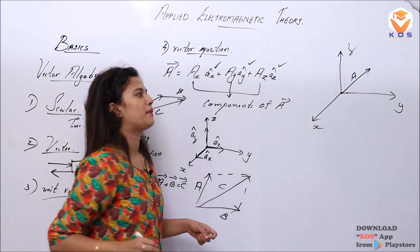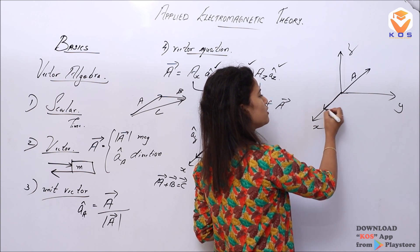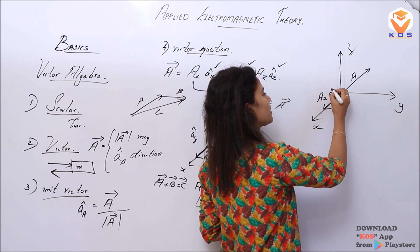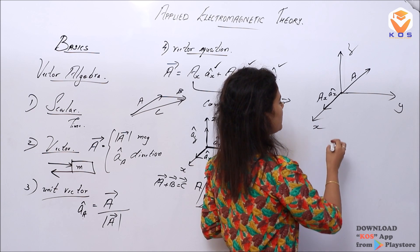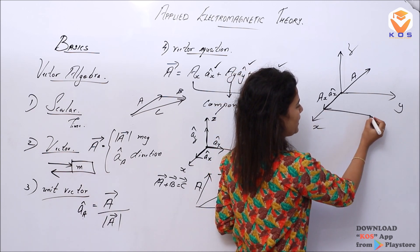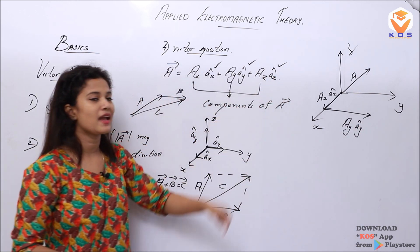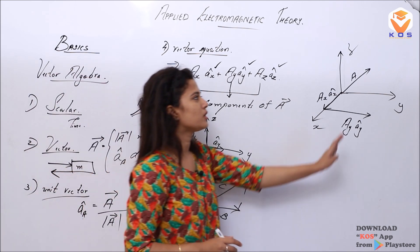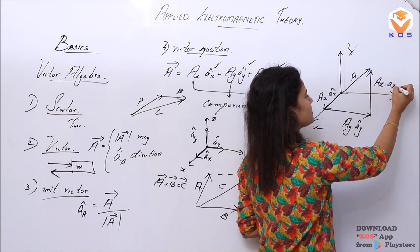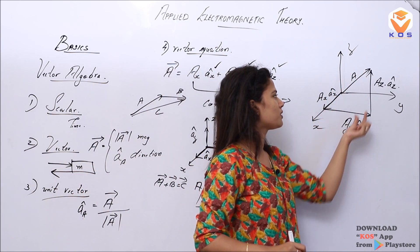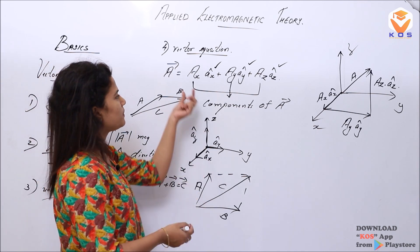We have AX·AX̂ directed along the X direction, then AY·AŶ directed along the Y direction, and AZ·AẐ directed along the Z direction. This is my AX component, AY component, and AZ component — this is how we resolve the vector.